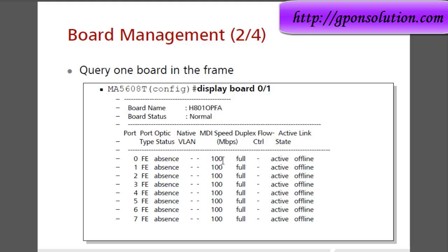The port speed is 100 Mbps, duplex is full, and the active state is active. Some ports show offline, meaning they are not in service, configured, or running.